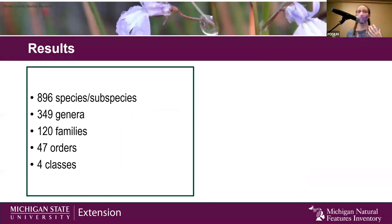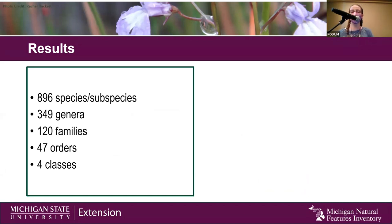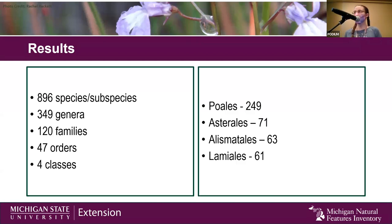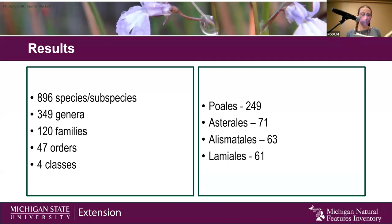So what have we found? This is still preliminary — we're still working on it and have a lot of data to add. But so far we have 896 species or subspecies represented in the five Great Lakes, coming from 349 genera, 120 families, 47 orders, and four classes. This represents about a 19% increase in the size of the Great Lakes Water Life database. As far as what was highly represented, no big surprises: Poales, Asterales, and Lamiales are all very large orders, so it makes sense they'd be highly represented. And the Alismatales is what you're thinking of if you think of an aquatic plant — like your pondweeds, frogbit, arrowgrass — it's a mainly aquatic order, so it makes sense it would also be highly represented.